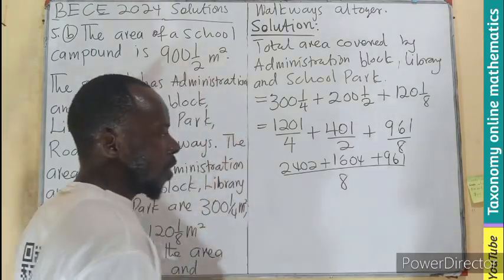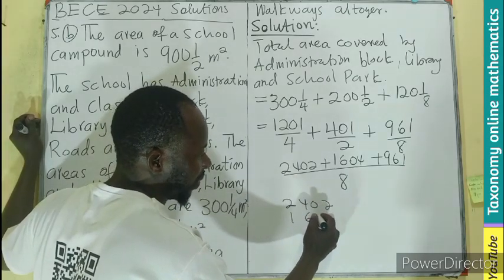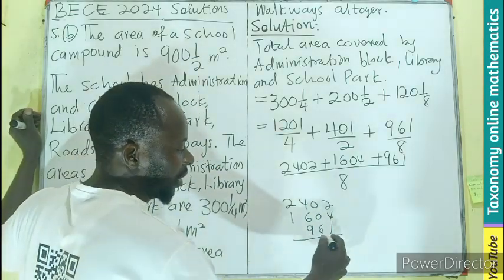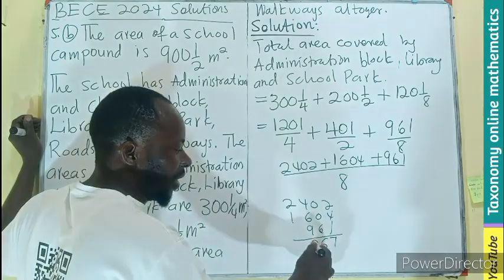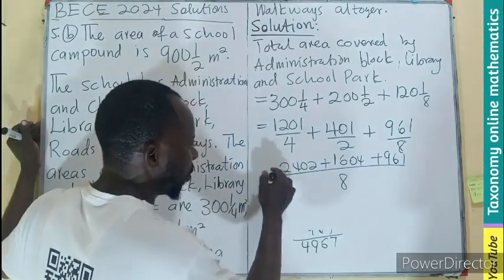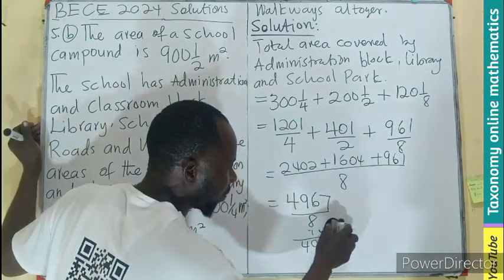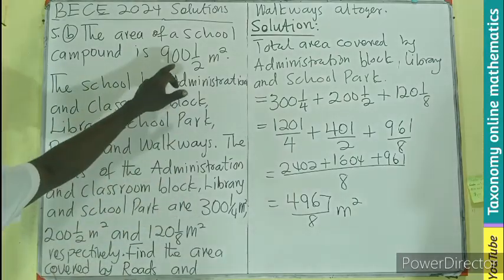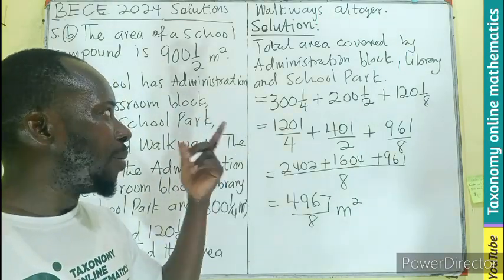Now we add all numerators together: 2,402 plus 1,604 plus 961. Adding: 2 plus 4 plus 1 is 7; 0 plus 0 plus 6 is 6; 4 plus 6 is 10, plus 9 is 19, carry 1; giving us 4,967. So the total area covered by the administration block, library, and school park is 4,967 divided by 8 meters squared.